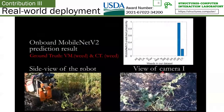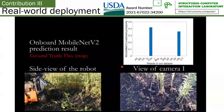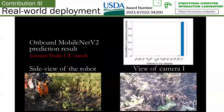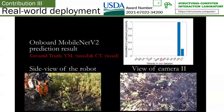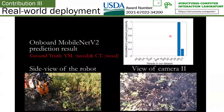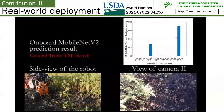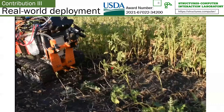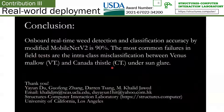This is our onboard MobileNet V2 result. The right corner shows the image the robot gets from its camera, and above it is the prediction score of the corresponding image. In conclusion, we can achieve about 90% accuracy on board using MobileNet V2, and we believe this is a breakthrough in precision farming in the real field. Thank you.